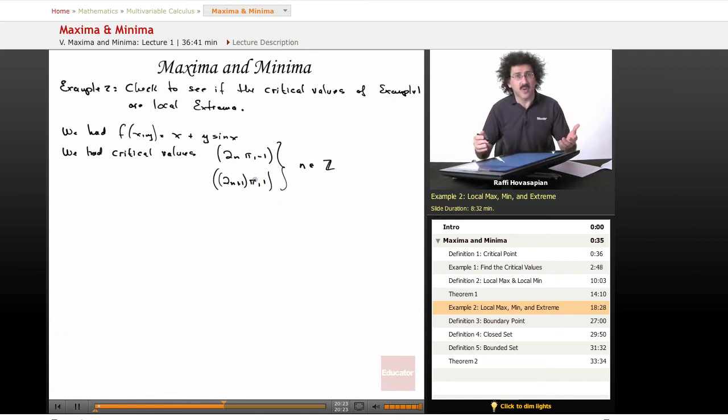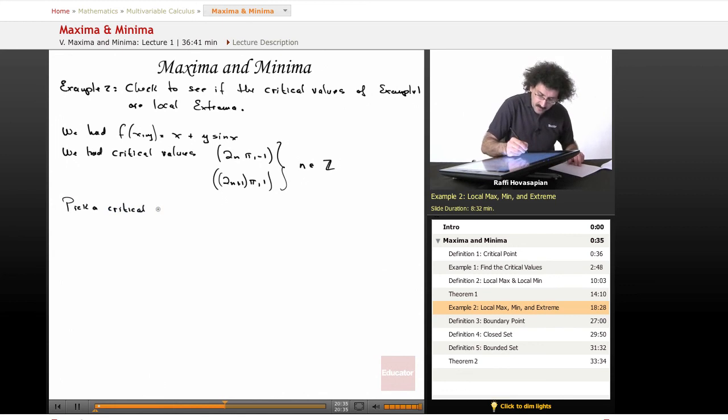Pick a value, just sort of pick one at random and work with that, subject that one to analysis. So just pick a critical point and check the value of the function. That's how you check maxes and mins. To check the value of the function in a small region, a small ball or disk around that point.